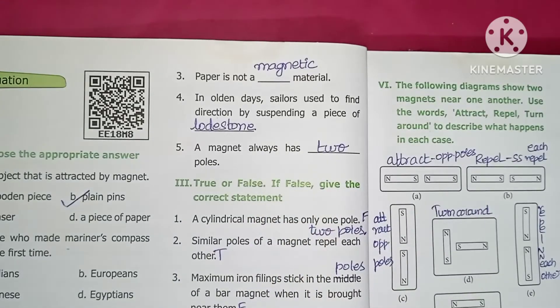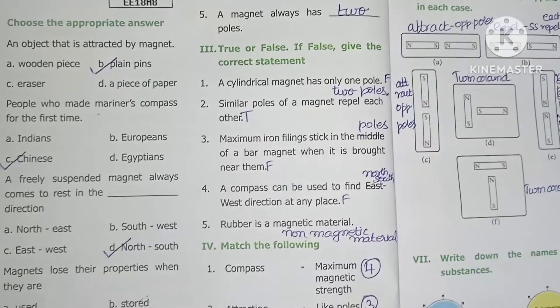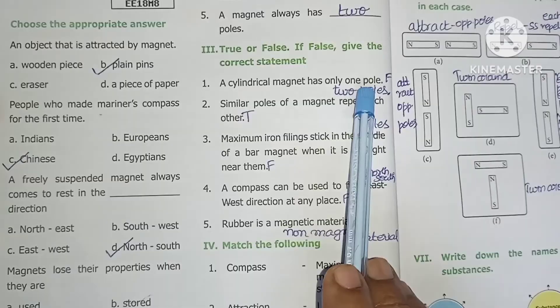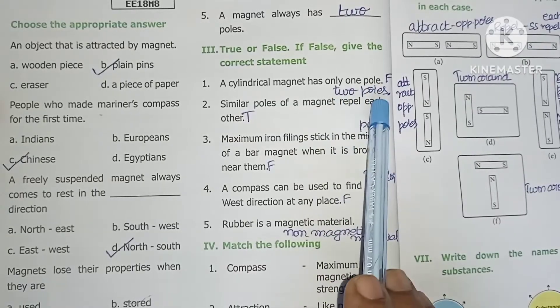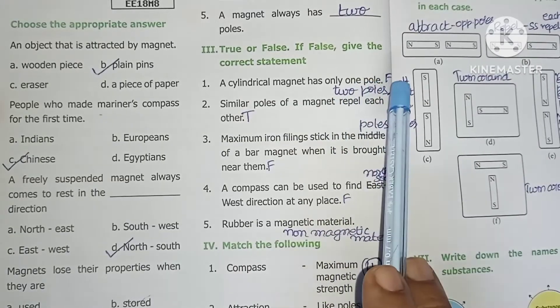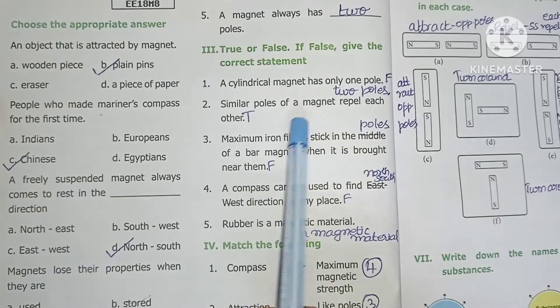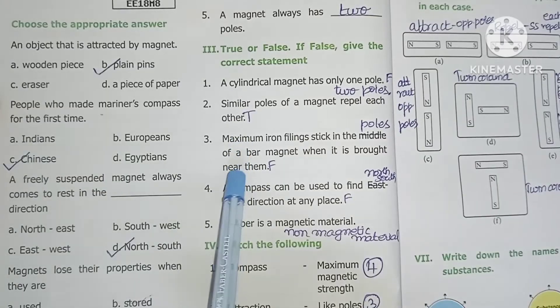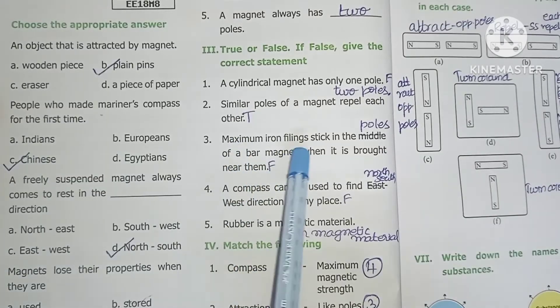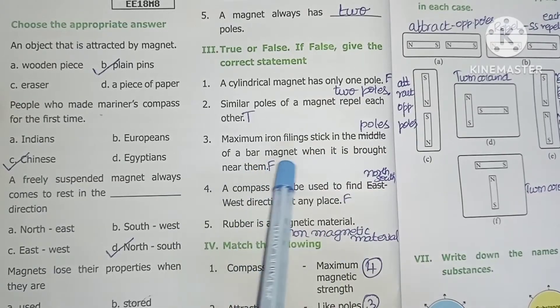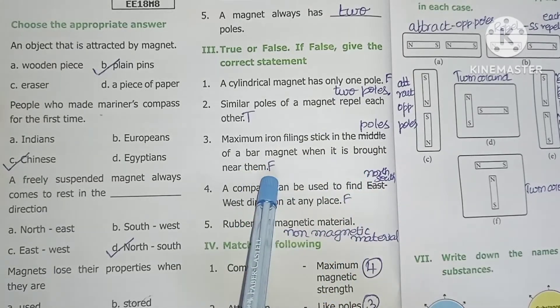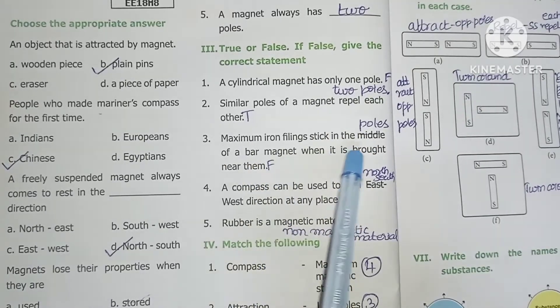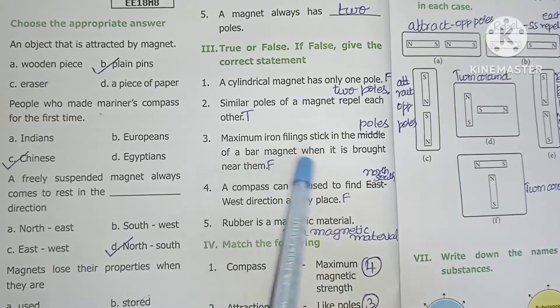Next, true or false. First, a cylindrical magnet has only one pole - false. Second, similar poles of a magnet repel each other - the statement is true. Third, maximum iron filings stick in the middle of a bar magnet when it is brought near them - false. They stick at the poles of a bar magnet.